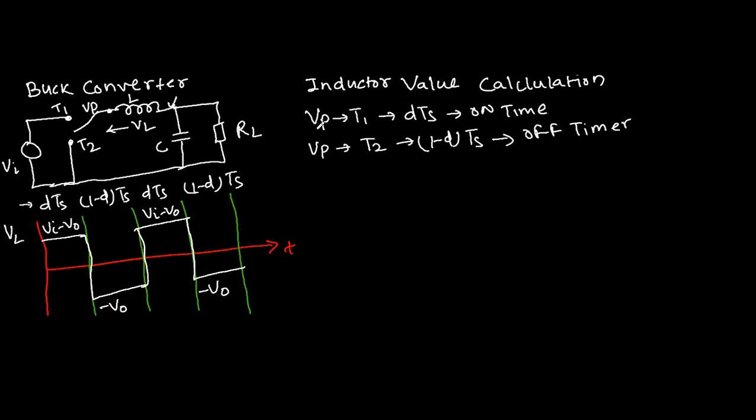During the off-time, the voltage across the inductor measured from this node is minus V0. I have drawn here the VL versus time — for the D·Ts period, what is the voltage across the inductor, and for the (1−D)·Ts period, what is the voltage across the inductor. I am showing you the inductor voltage waveform for two cycles: one for D·Ts and (1−D)·Ts, and again one cycle for D·Ts and (1−D)·Ts.